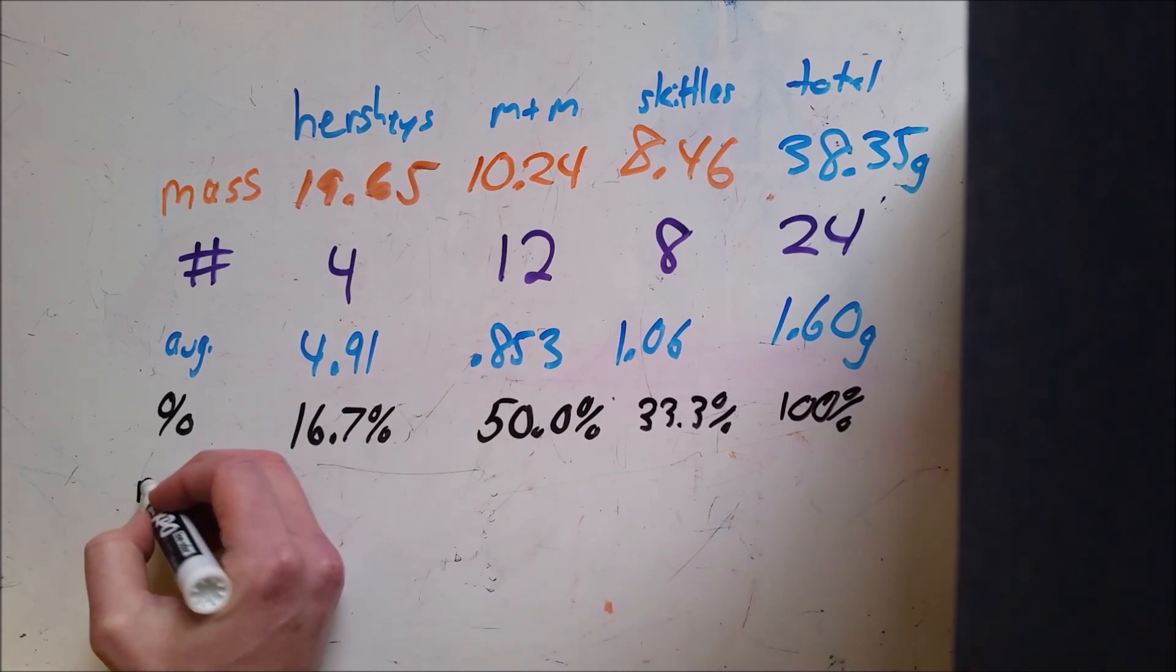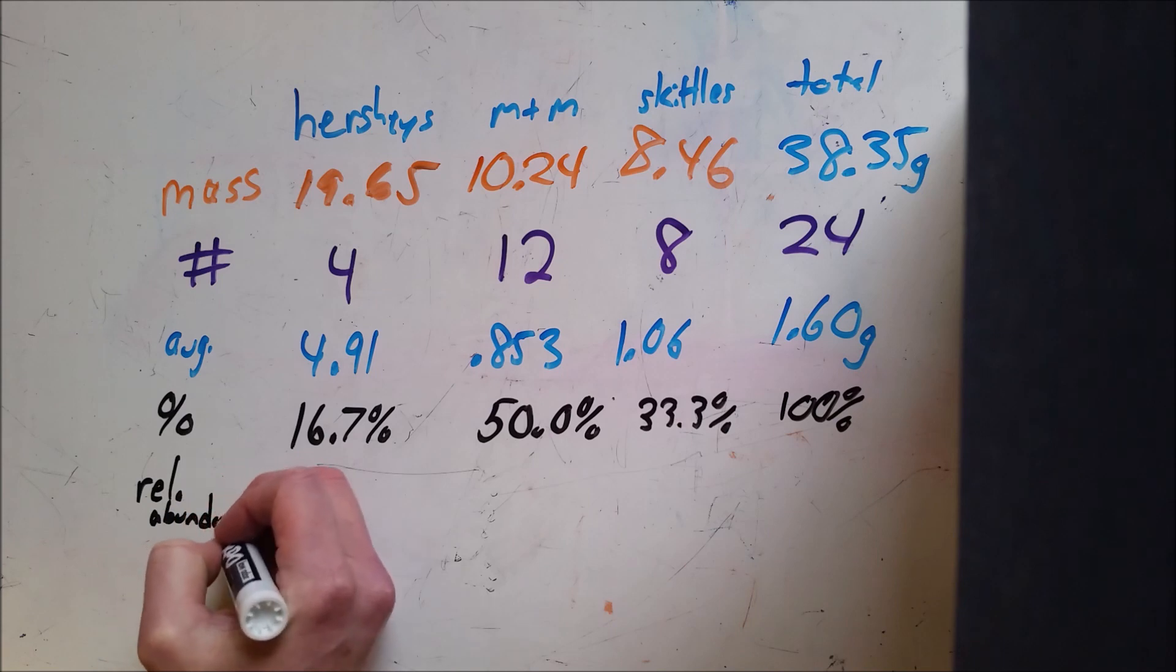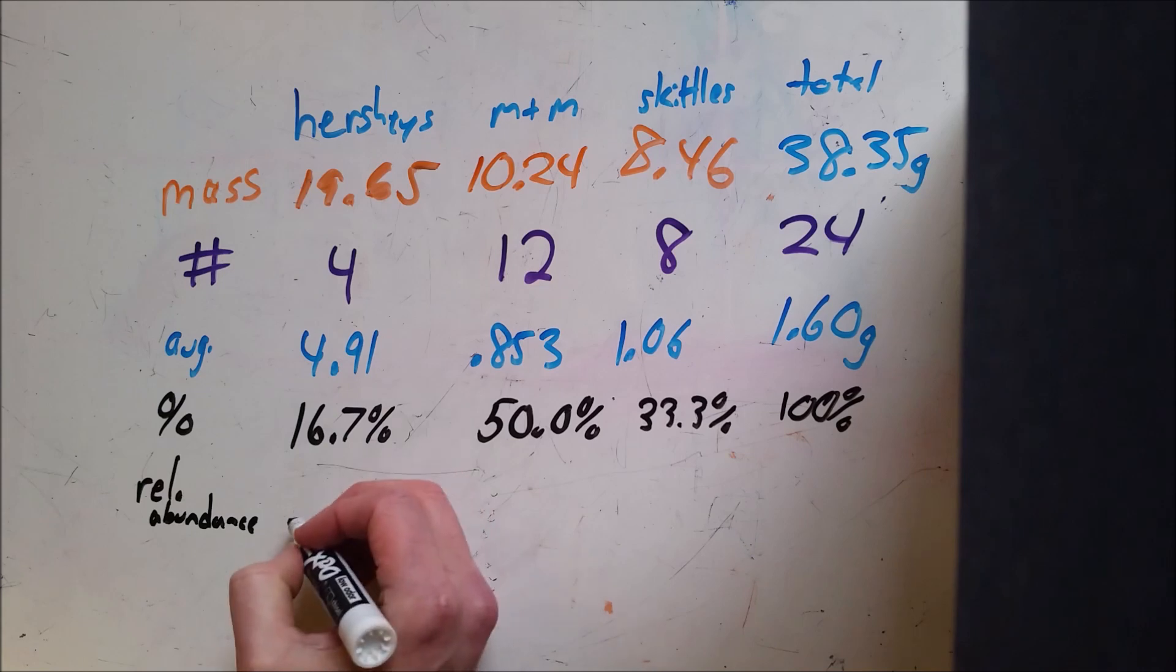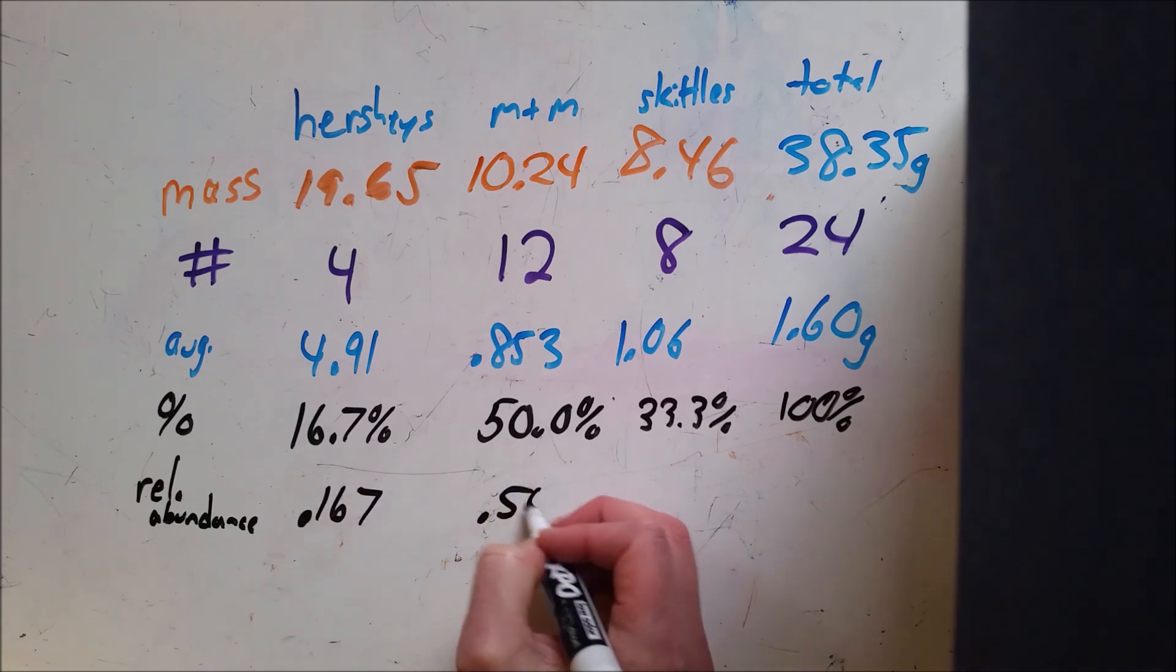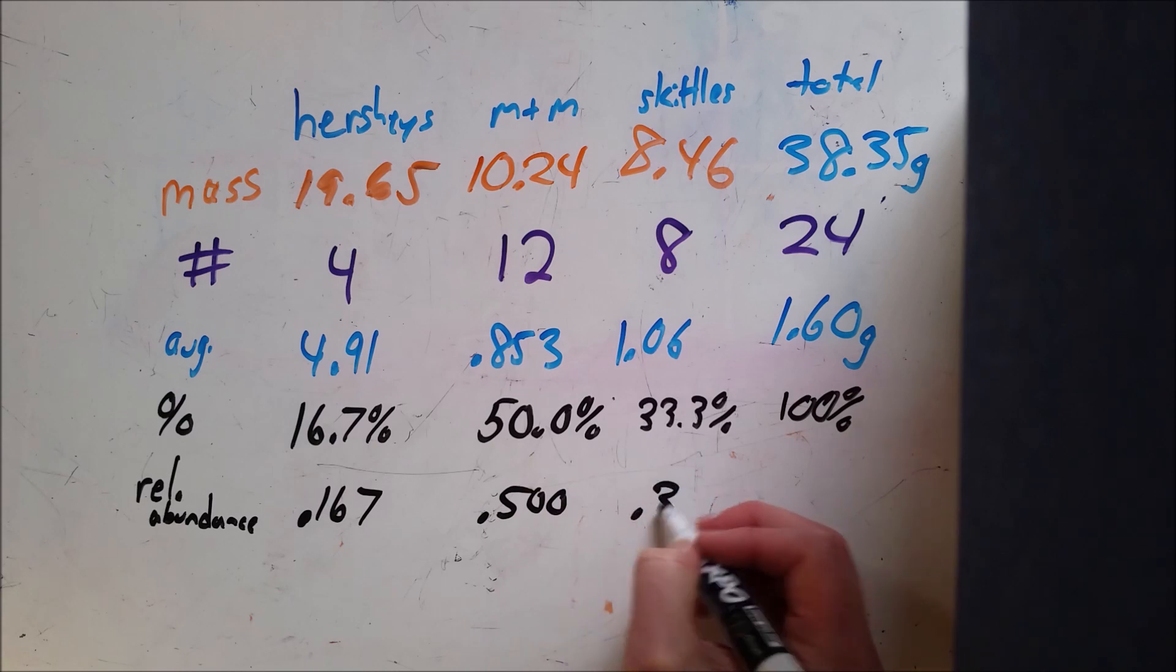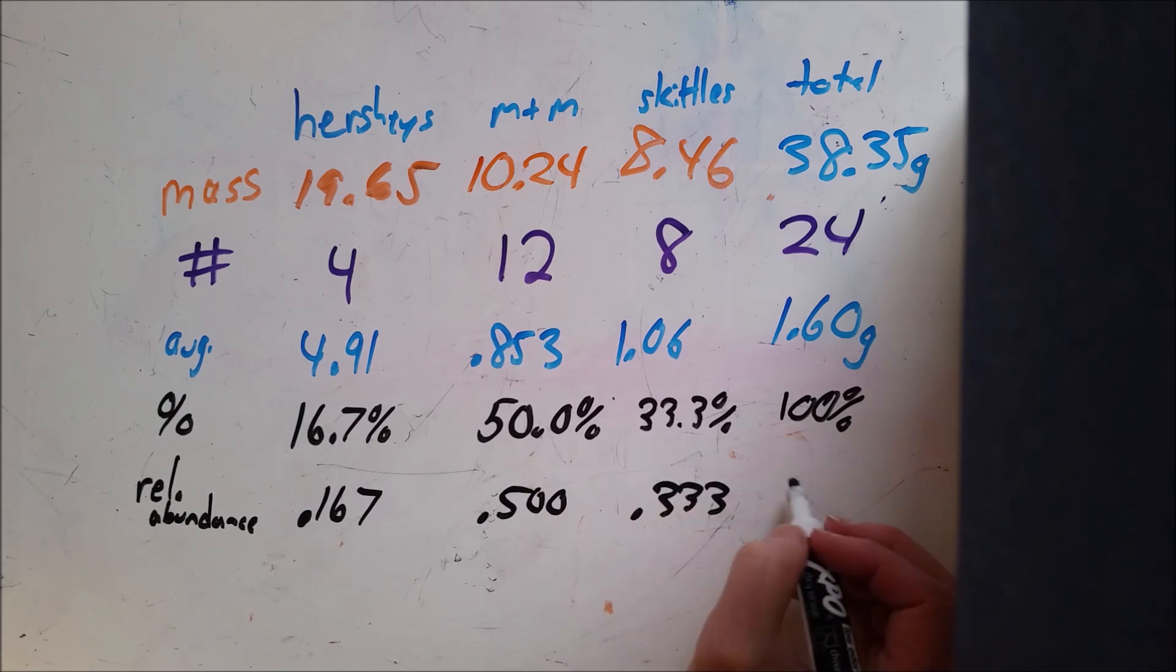So I want to put that as a relative abundance, which is the same thing as the percentage but I'm just going to change it from a percent mode out of 100 to out of 1. So in other words I'm going to make this into a decimal. So then instead of being out of 100 we're out of 1, and our total would be 1.